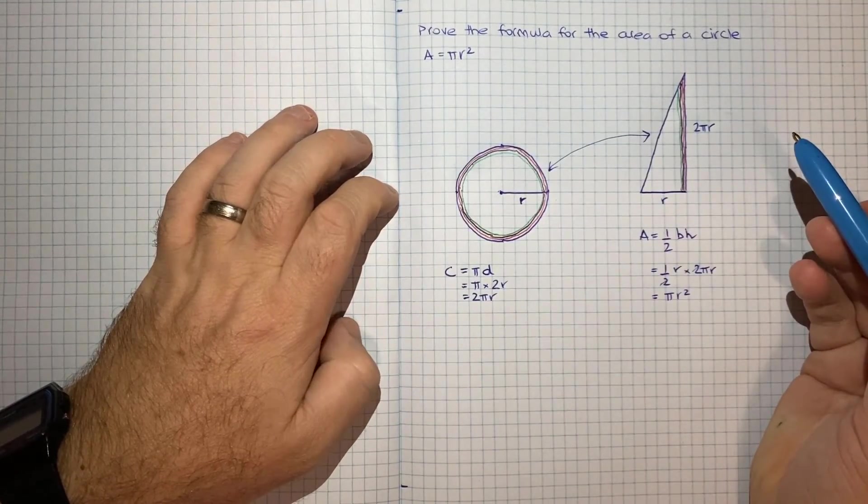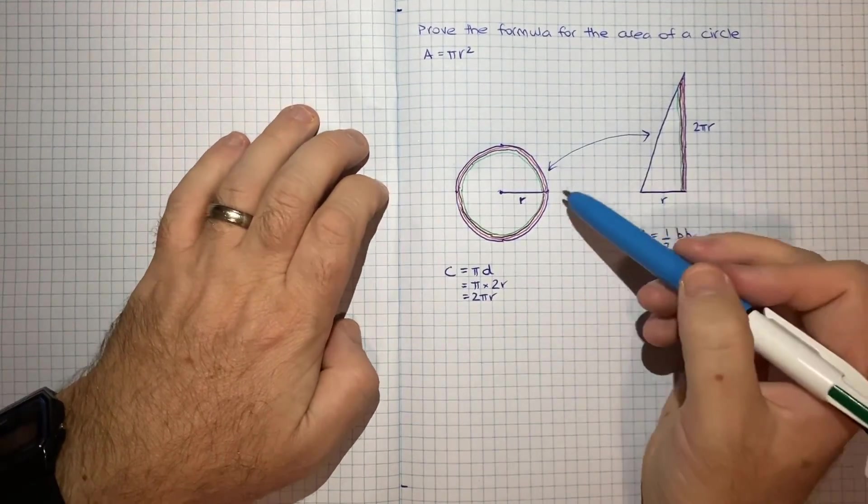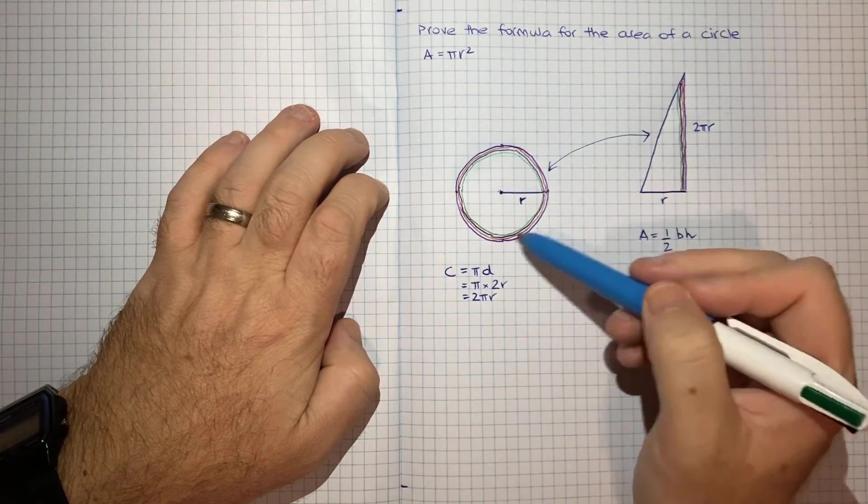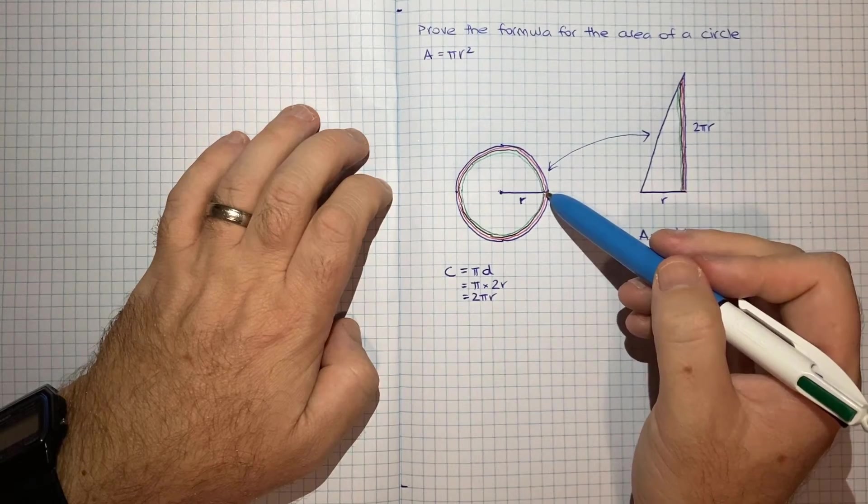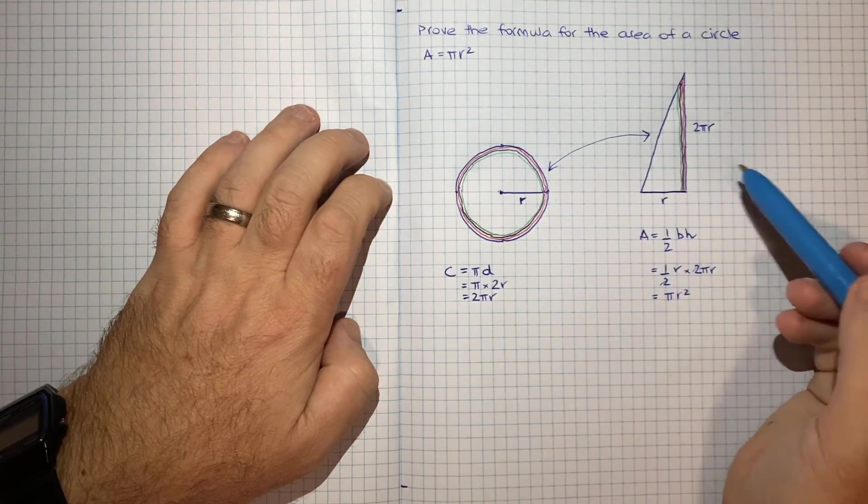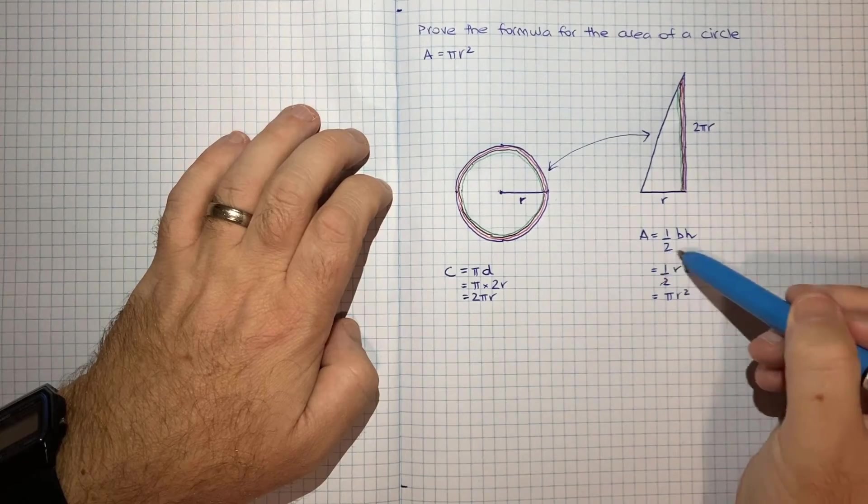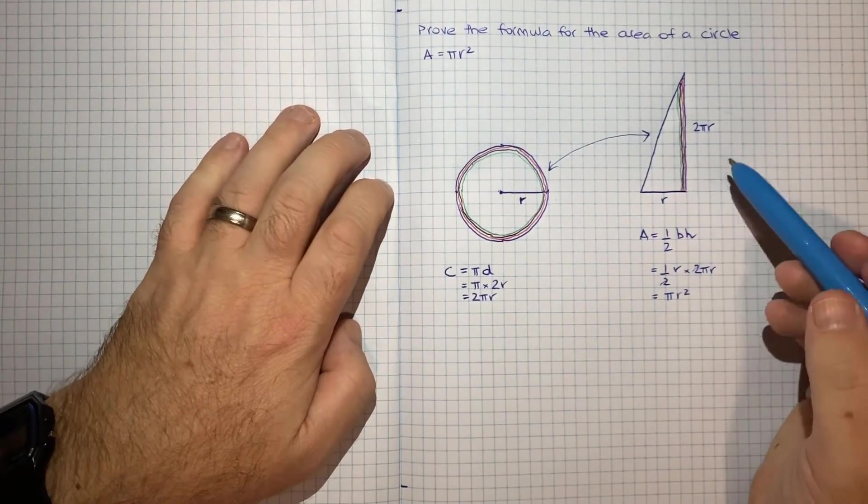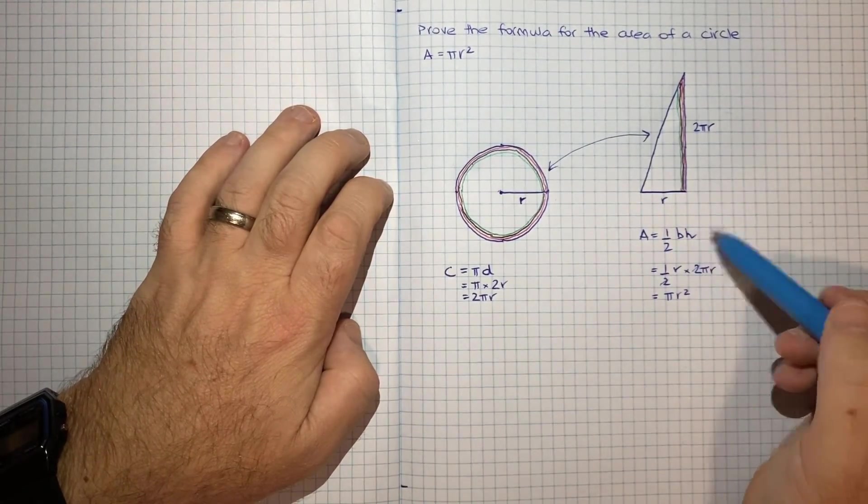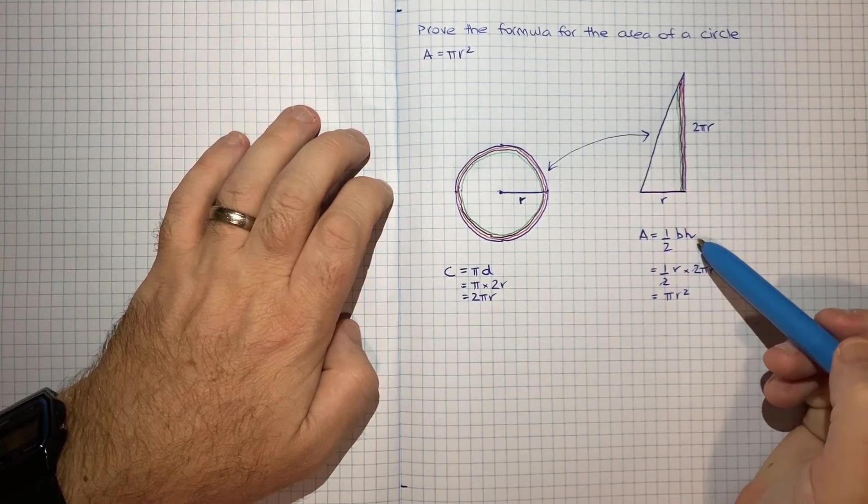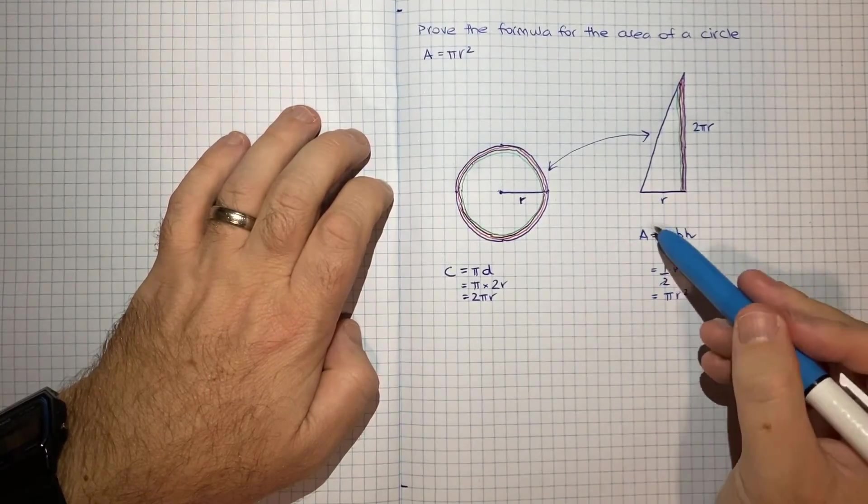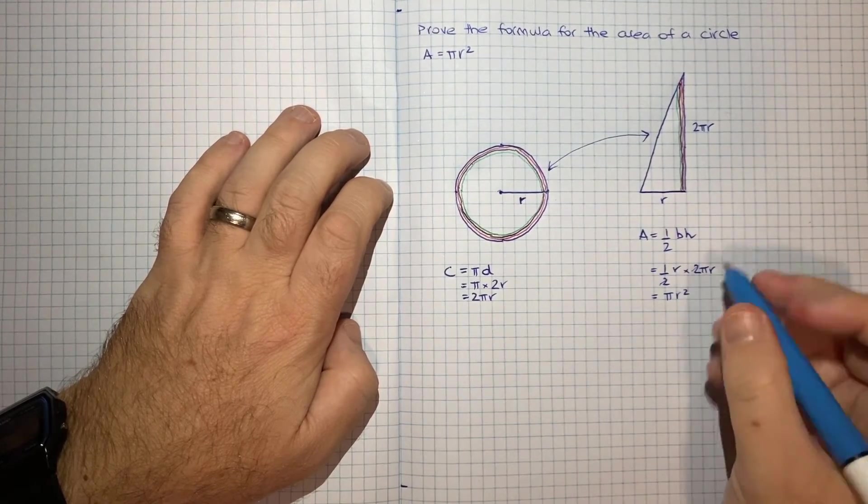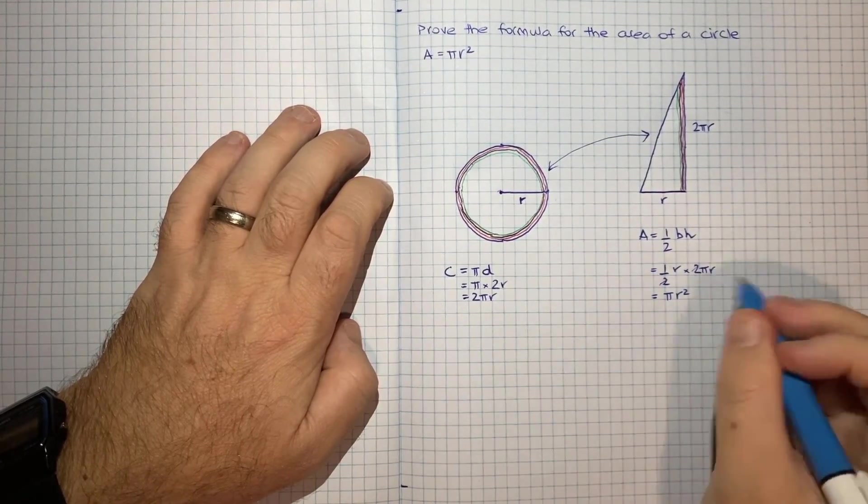So really simple proof, just kind of takes a bit of thinking geometrically and visualising how you can get from a circle to a triangle. But from there it's very simple, if you know the formula for the area of a triangle, which typically you would learn that before going onto circles. So it's kind of not a huge leap. You can take that prior knowledge and then derive this new piece of knowledge, which is the area of a circle.